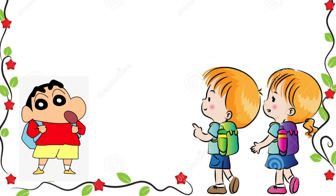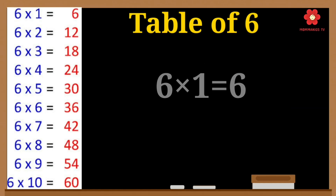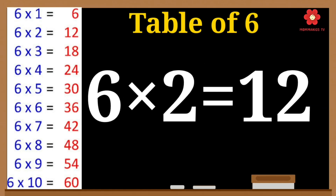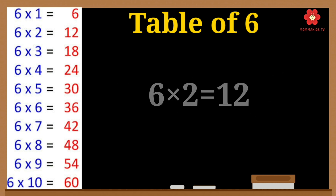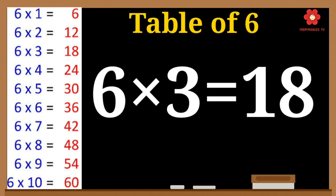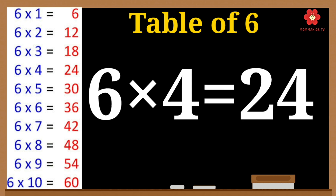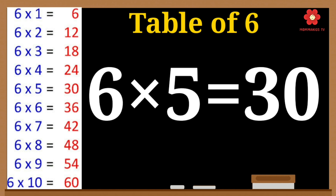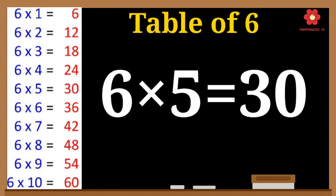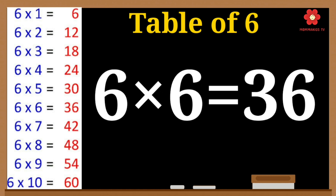6 ones are 6. 6 twos are 12. 6 threes are 18. 6 fours are 24. 6 fives are 30.